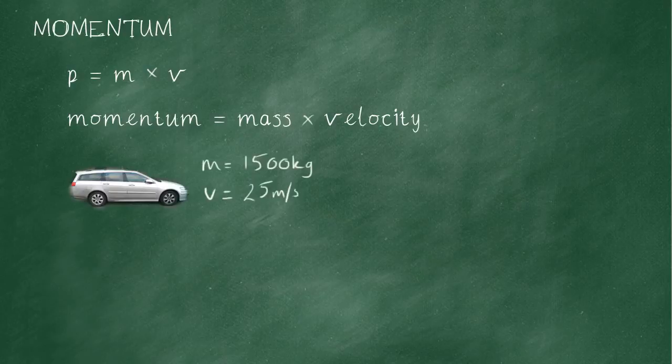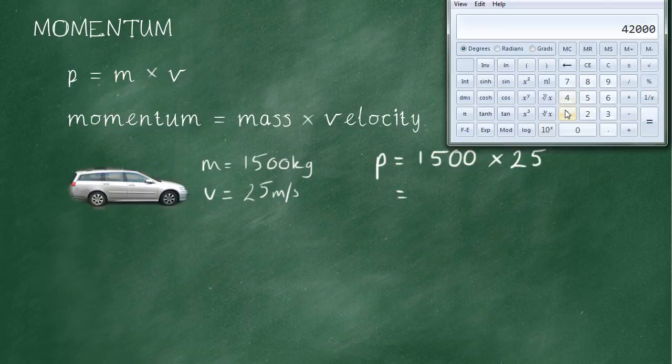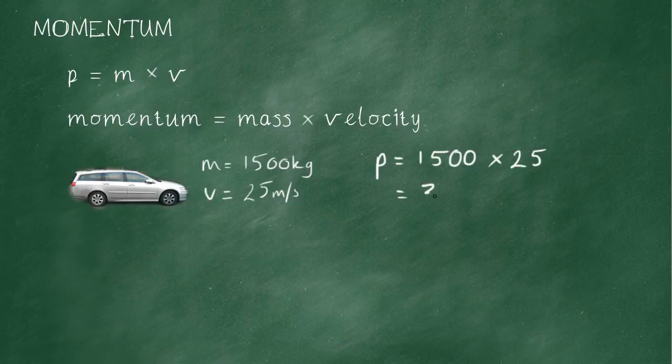So here we're going to compare three situations. We're going to use the equation to calculate the momentum firstly of a car. So write out the equation. P equals m, which is 1500, 1500 kilograms, the mass, times v, the velocity, 25 meters per second. Then reach for the calculator. 1500 times 25 gives me 37500, 37500 kilograms meters per second.